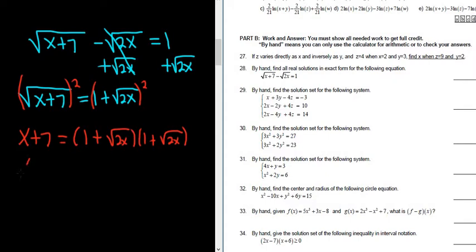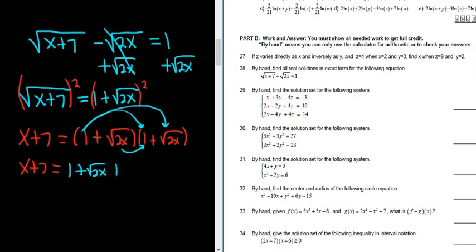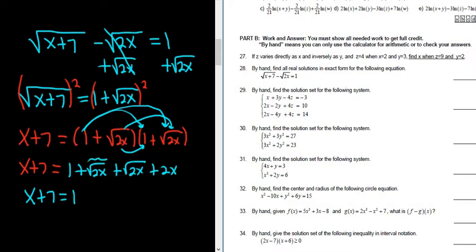Now we distribute. We have x plus 7 equals: 1 times 1 is 1, then 1 times the square root of 2x is the square root of 2x, then square root of 2x times 1 is the square root of 2x again, and square root of 2x times square root of 2x is just 2x. So we have x plus 7 equals 1 plus 2 square root of 2x plus 2x.